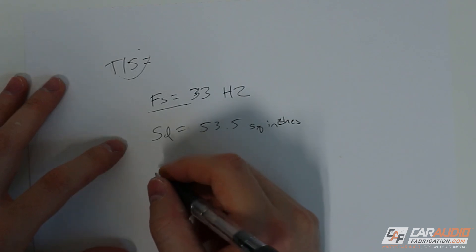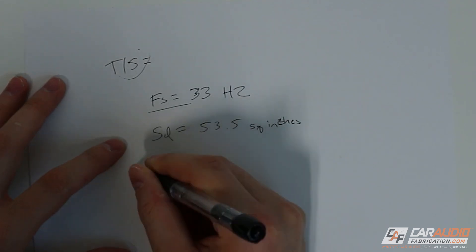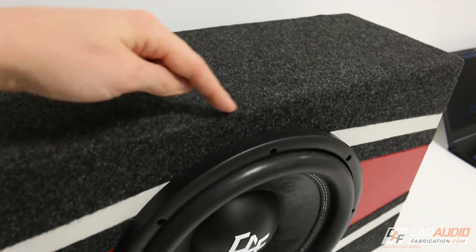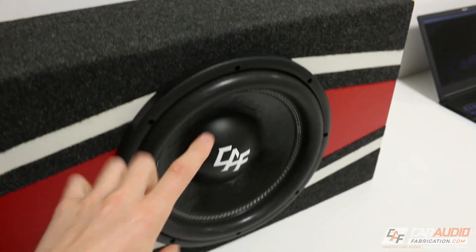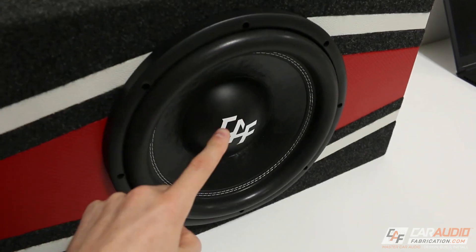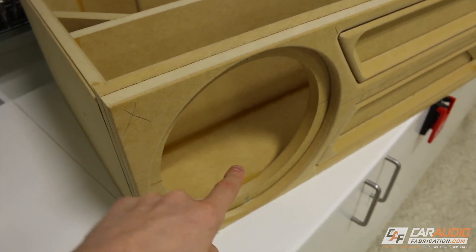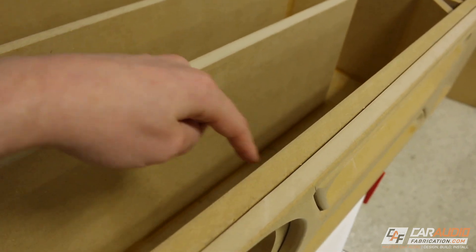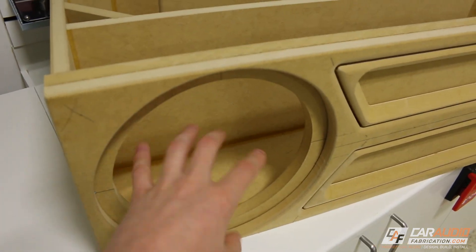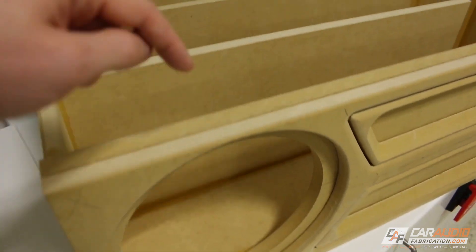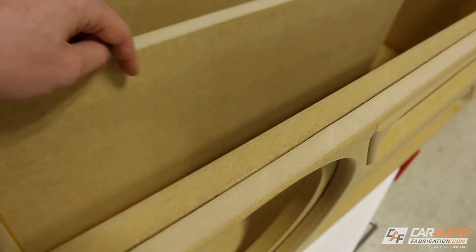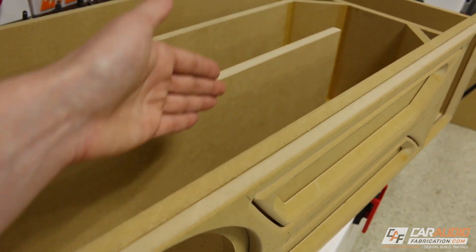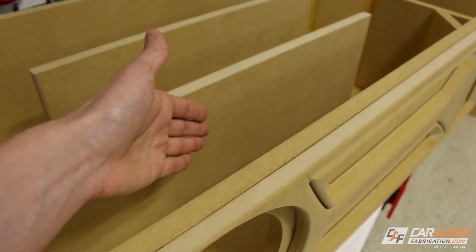You also want to pay attention to the actual measurements of the subwoofer itself: the overall diameter, the cut diameter, and the mounting depth. These are important for any style of box, but they're especially critical for a T-line because the port cross-sectional area is so important. We need enough height for the subwoofer to actually mount, and enough depth within the box — and both of these values impact the port cross-sectional area.